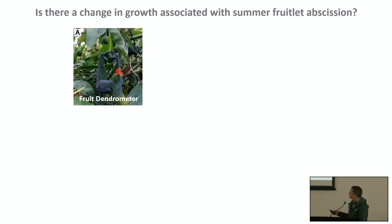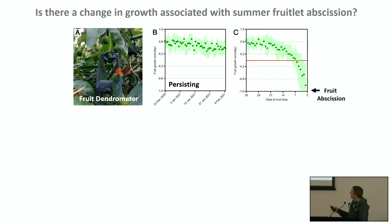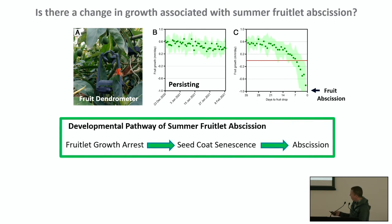In this trial, we used fruit dendrometers to capture changes in fruit diameter daily and calculate daily growth rates for persisting fruits. During the course of this trial, some fruits abscised. What we found is that fruits undergo growth arrest, then shrink and abscise from the tree. We conclude that abscission is a secondary event; the primary event is fruit growth arrest, followed by seed coat senescence, and then abscission.